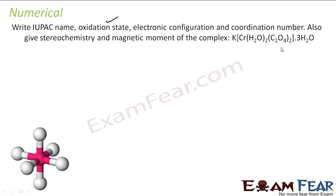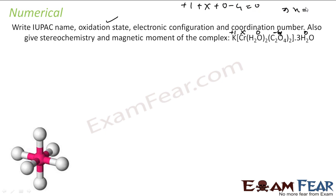Let's first write the oxidation state. The ligands contribute 0, 0, and 0. If Cr has charge x, and oxalate (C2O4) contributes minus 2, minus 2, that gives a total of minus 4. Solving: plus 1 plus x plus 0 minus 4 equals 0, so x comes out to be plus 3. The oxidation state is plus 3.